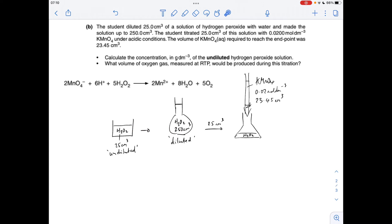So moving on to the calculation now, I've got one of my trusty diagrams just to picture what's going on here. And obviously I've copied up the equation as well, so we need the ratio between the MnO4 minus and the H2O2. We also need this ratio as well, because we've got to do a calculation on the volume of oxygen that this reaction would produce at RTP.